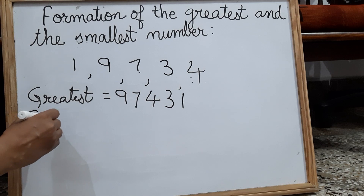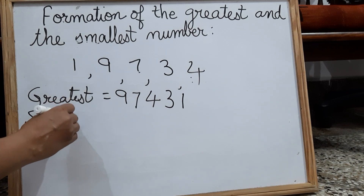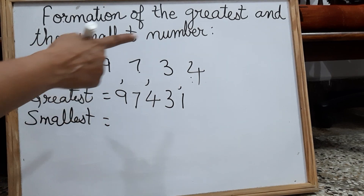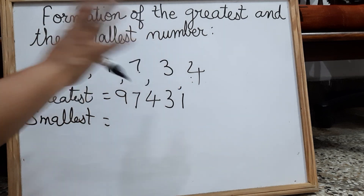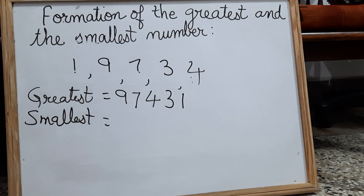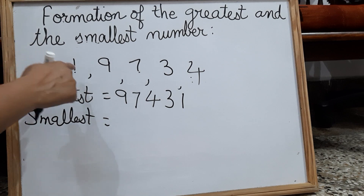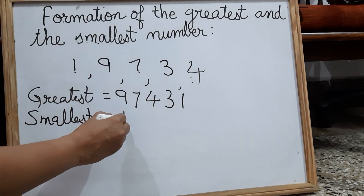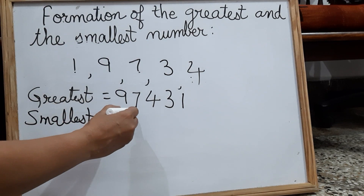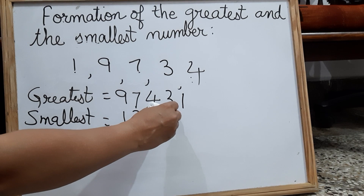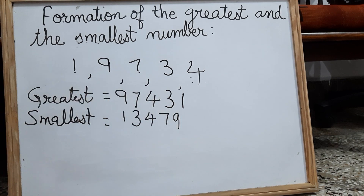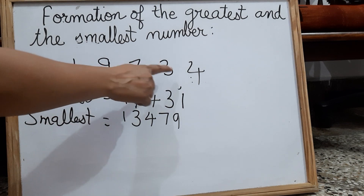What will be the smallest number? Start with the smallest digit. The smallest digit out of these five digits is one. Use these digits only and don't repeat them. One is the smallest digit, then three, then four, then seven, and then last is nine. So we got 13,479 as the smallest number from these five digits.